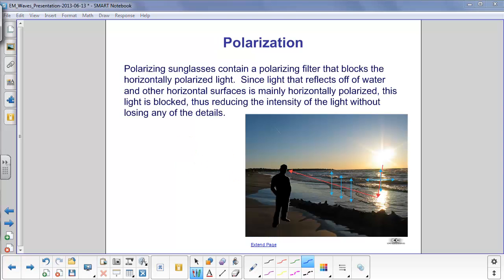Polarizing sunglasses, and those are the good sunglasses you buy, contain a polarizing filter that blocks the horizontally polarized light. So light that reflects off water or other horizontal surfaces is mainly horizontally polarized. So this light, this reflection, will be blocked. The reflection off the water here would be blocked. It will reduce the intensity of the light, but it won't lose any of the details because you still have the vertical electric fields coming so you can resolve what you're seeing. So this cuts down the glare.